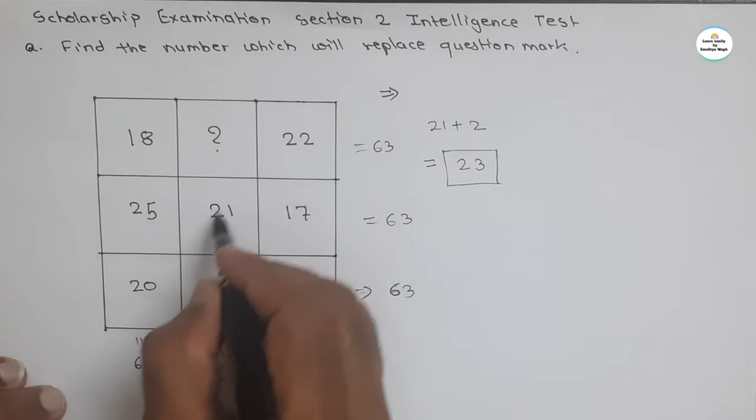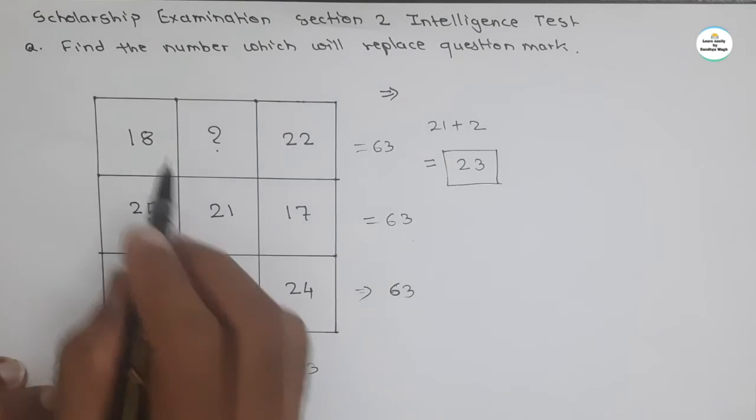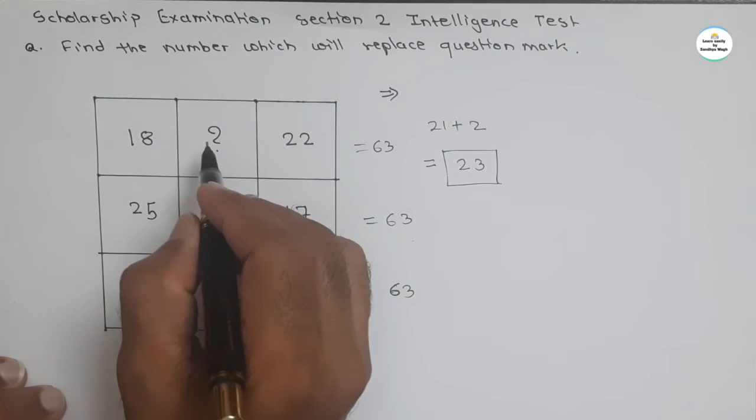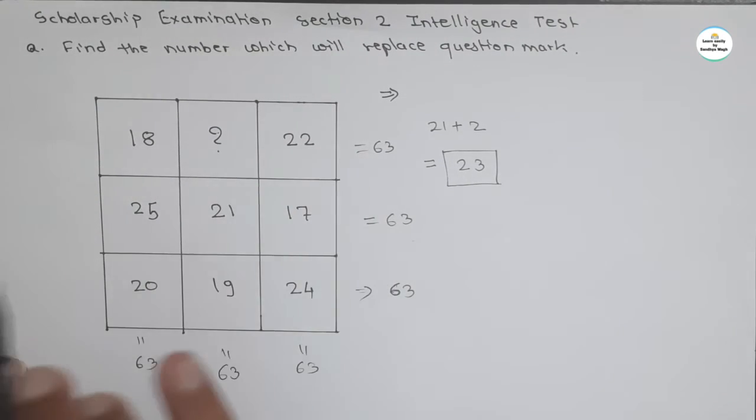Summation also, take summation like this and like this. You also get summation, total summation 63. And here we got the number 23 which will replace this question mark which is the proper answer.